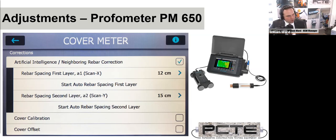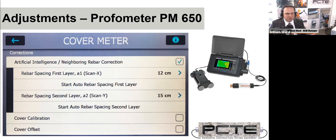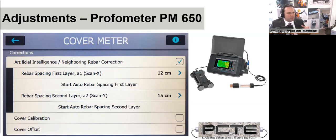Steel fiber reinforced concrete will stop the function of both GPR and cover meter. The Profometer cover meter can be upgraded with a Profometer corrosion accessory, so it can do cover measurement and half-cell potential survey or corrosion mapping on the same machine. It's very common to combine cover measurements with half-cell potential. Cover meters are not affected by moisture content, so they can even be used underwater or on freshly cast concrete.